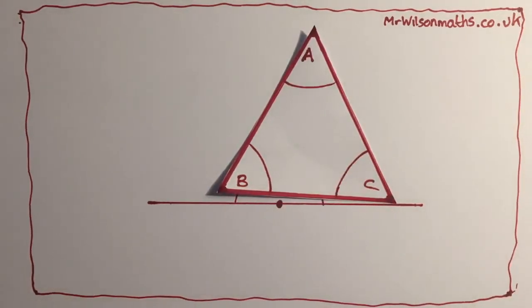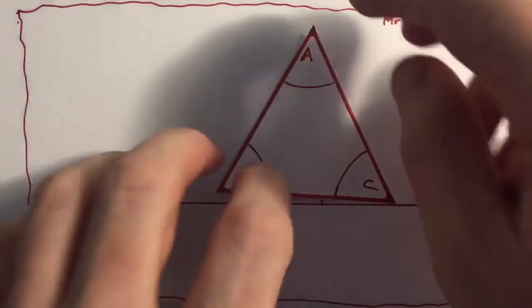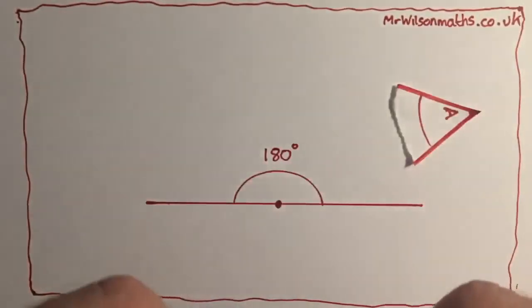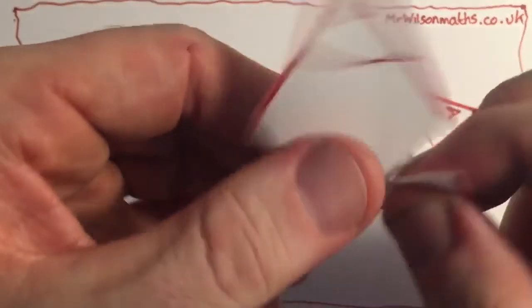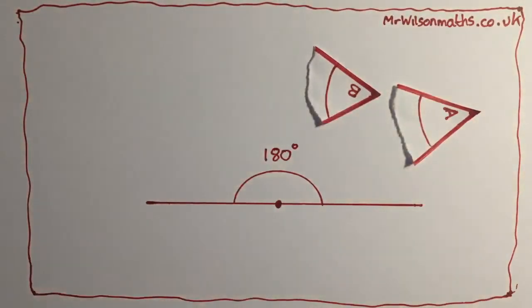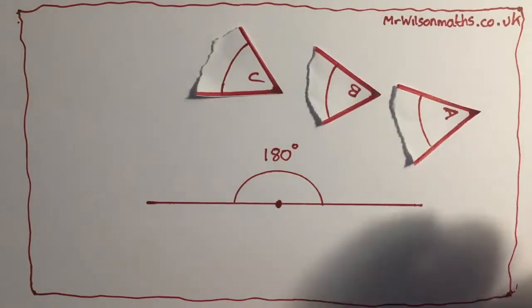That is really good imagining. Now what I'm going to do to that triangle is I'm going to destroy it. So I'm going to rip out angle A, I'm going to rip out angle B, and I'm going to rip out angle C. So what I've got here is the three internal angles from a triangle.